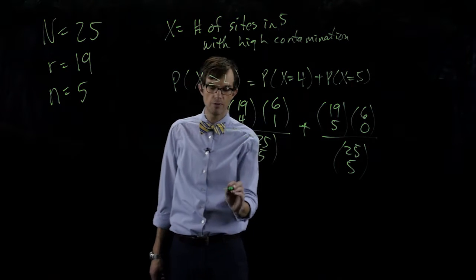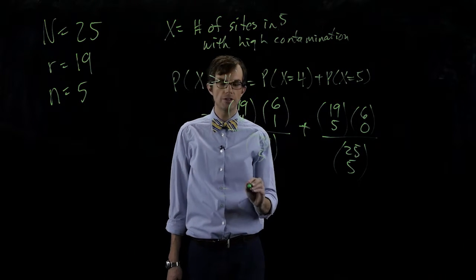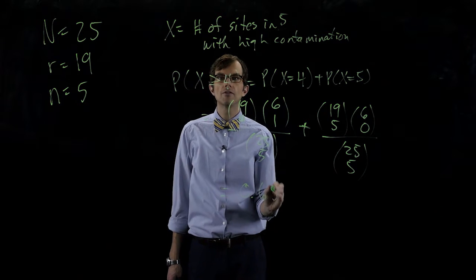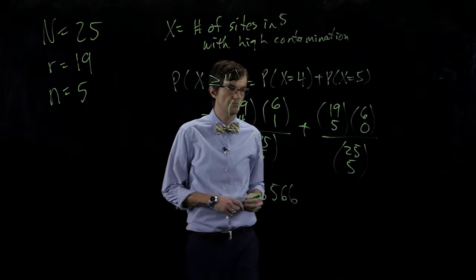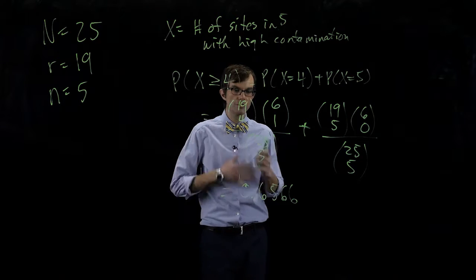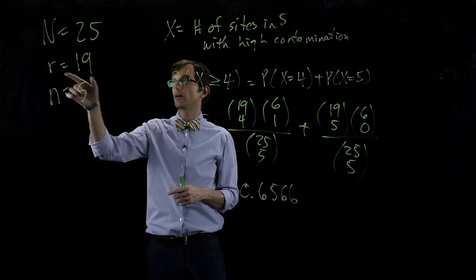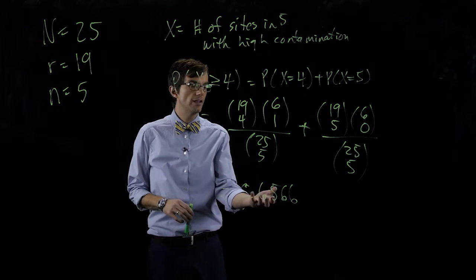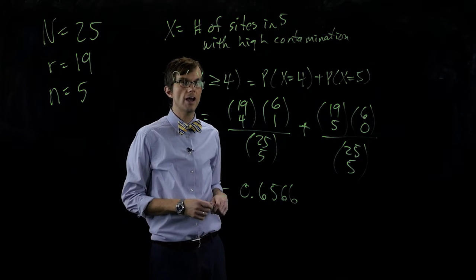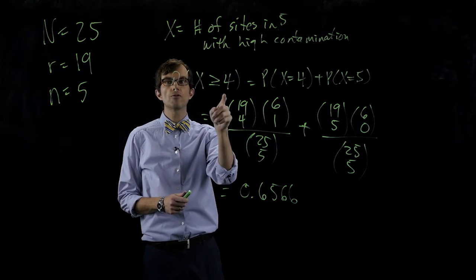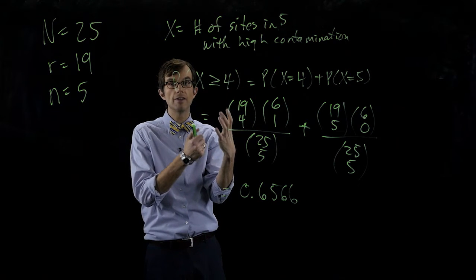Straightforward calculation from here is just arithmetic and if we do that we should get 0.6566. So on average if we do this over and over again with these twenty-five different sites, if they're composed the same way, then roughly sixty-six percent of the time we're going to have four or five of those five that have high contamination.